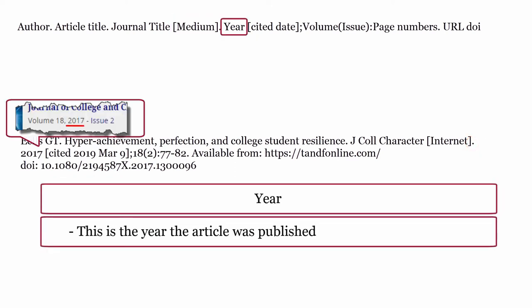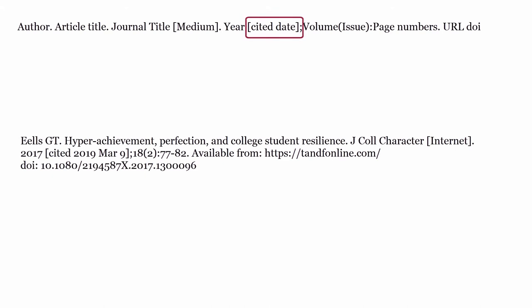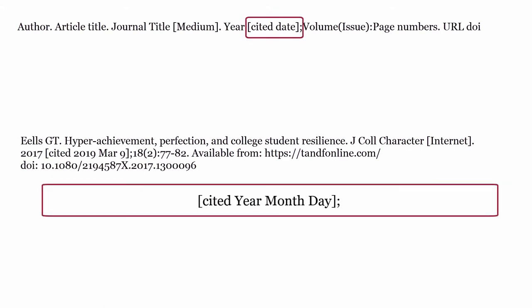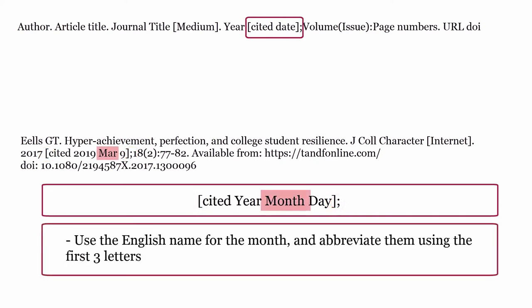Year: this is the year the article was published, formatted with only the year. Cited date: this is the date you viewed the article. Use the word 'cited' in lowercase, and include the year, month, and then day. This is enclosed within square brackets, and end this section with a semicolon. Use the English name for the month, and abbreviate them using the first three letters.